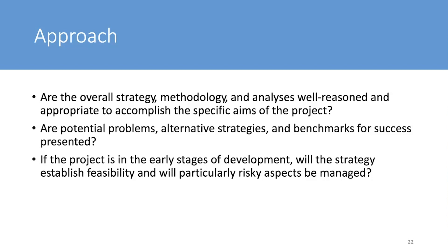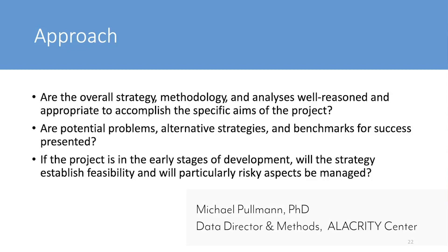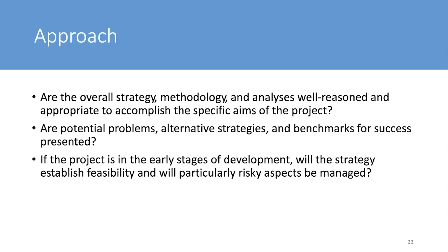Significance and approach are kind of the heart of the proposal. If reviewers don't like your significance and approach, those scores will also be reflected in every other aspect — innovation and everything else — because they're central to your project. The approach has to be really solid; that's the place to invest your time. The three places I iterate the most in my writing are the aims page, the significance section where I justify the study, and the methods section where I make sure everybody knows what we're doing and why.